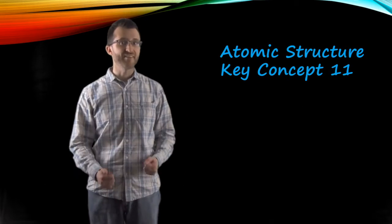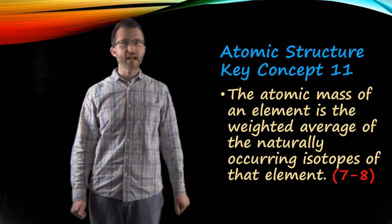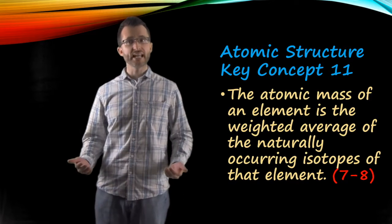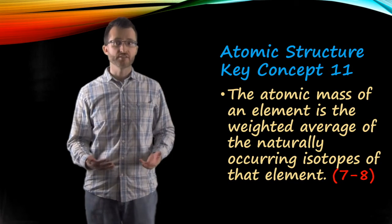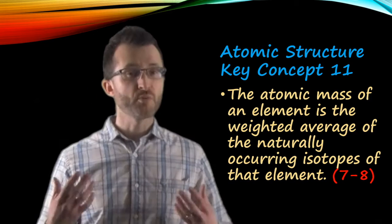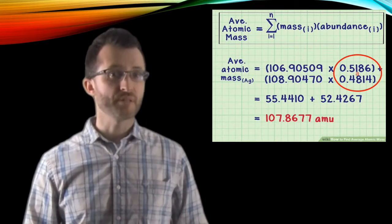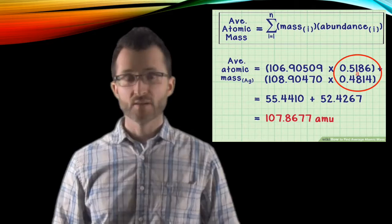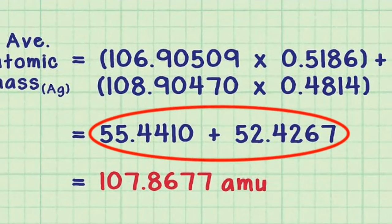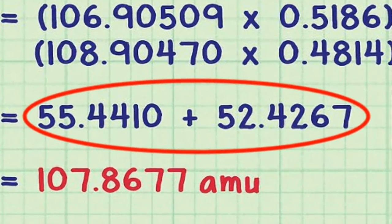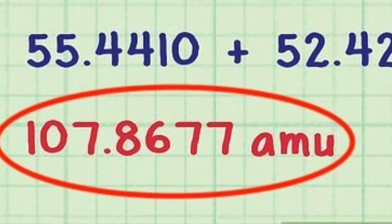Atomic structure, key concept eleven. The atomic mass of an element is the weighted average of the naturally occurring isotopes of that element. So we want to take that percentage and make it a decimal and we're going to multiply it by the mass given. We'll do that for all the different isotopes, then we'll add them up. At the end, we should expect to see a decimal number with the units U.